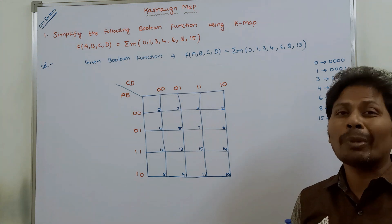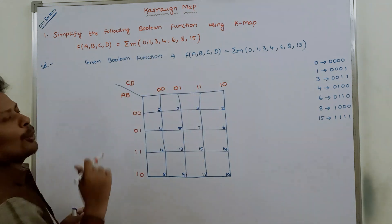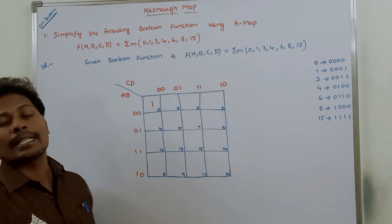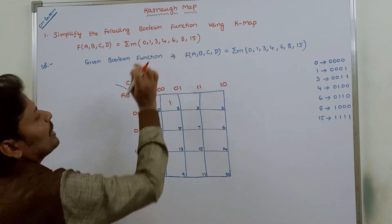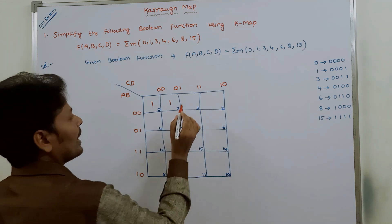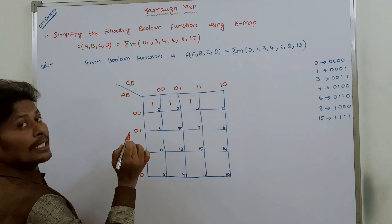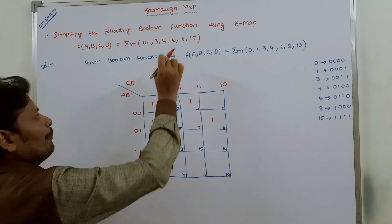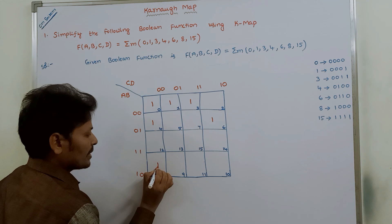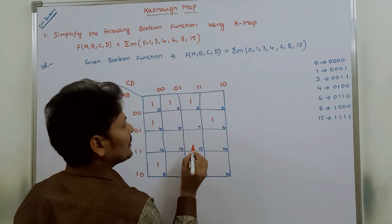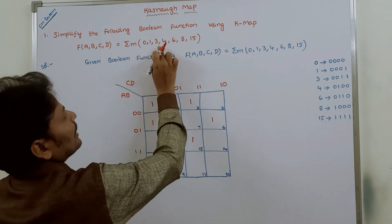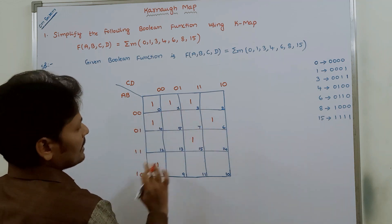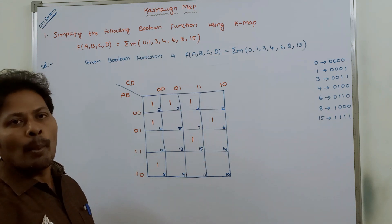For each minterm, identify the corresponding cell number and place 1 in that cell. So: minterm 0 → cell 0, place 1; minterm 1 → cell 1, place 1; minterm 3 → cell 3, place 1; minterm 4 → cell 4, place 1; minterm 6 → cell 6, place 1; minterm 8 → cell 8, place 1; minterm 15 → cell 15, place 1. There are 7 minterms, so 7 ones are placed in the Karnaugh map.